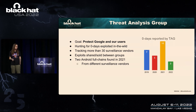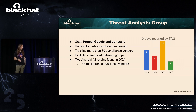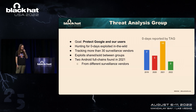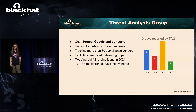There was one case — a Chrome integer logic flaw back in 2021 — where we saw several groups using the same exploit, so there's also some form of cooperation going on. Next I'll talk about two Android full chains that we discovered in 2021, from two different surveillance vendors.